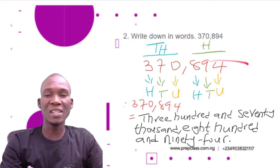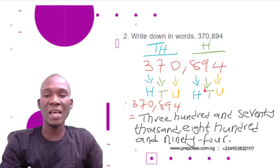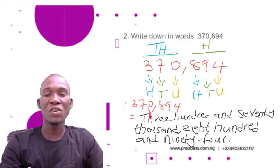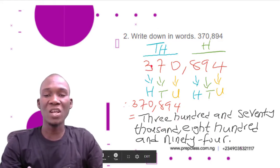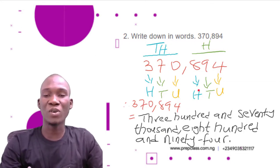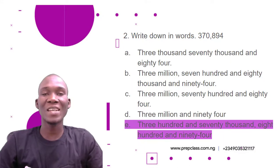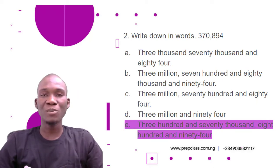Looking at 894, we break it into place values: 8 in hundreds, 9 in tens, 4 in units — so we say eight hundred and ninety-four. Combining the numbers, we get three hundred and seventy thousand, eight hundred and ninety-four. The correct option is option E: three hundred and seventy thousand eight hundred and ninety-four.